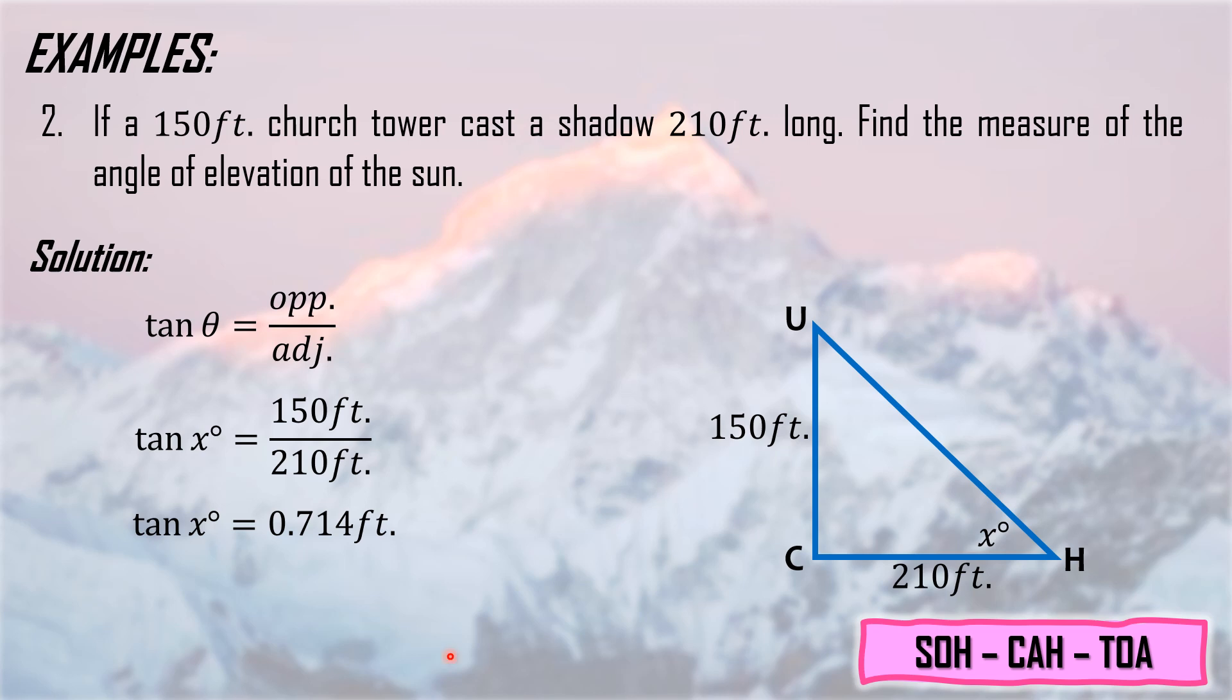Since we're finding the value of X degrees, we need to transpose the tangent to the right side of the equation. When we transpose tangent, this becomes tangent raised to negative 1 or inverse tangent times 0.714. Using your scientific calculator, press shift or second function, then tangent, then type 0.714. Therefore the value of the angle of elevation is 35.53 degrees.